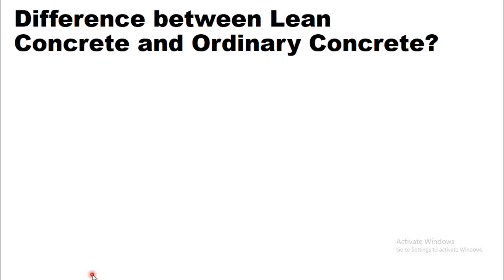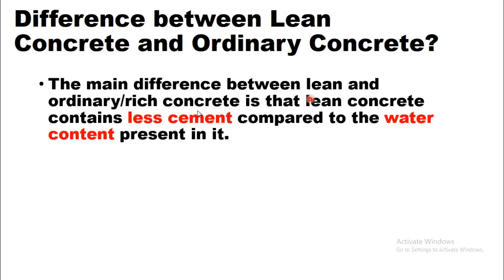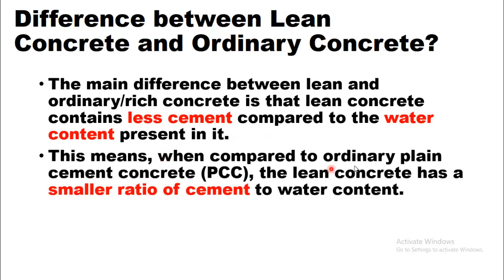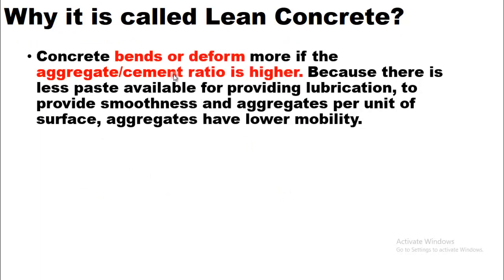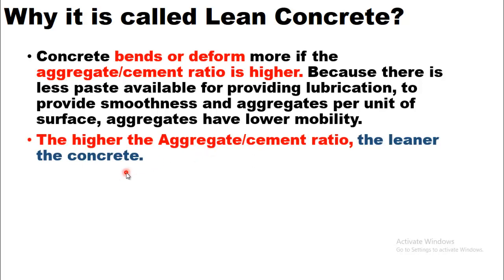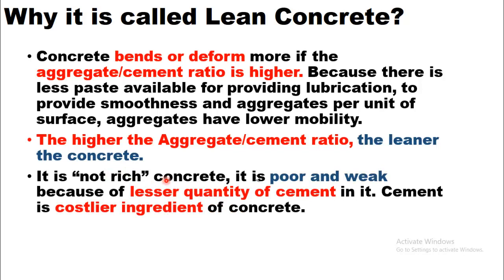What is the difference between lean concrete and ordinary or rich concrete? The main difference is that lean concrete contains less cement compared to the water content present in it. Compared to ordinary plain cement concrete (Portland or plain cement concrete), lean concrete has a smaller ratio of cement to water content. Concrete bends or deforms more if the aggregate-to-cement ratio is higher, because there is less paste available for lubrication. Aggregates have lower mobility; the higher the aggregate-cement ratio, the leaner the concrete.